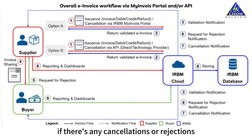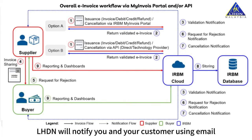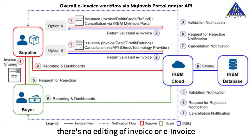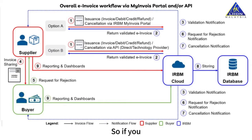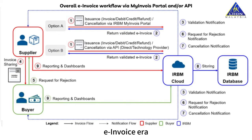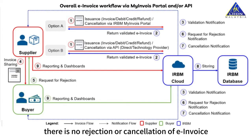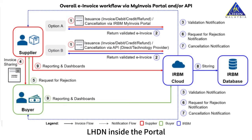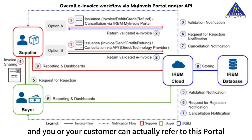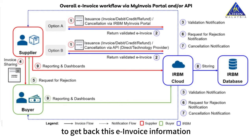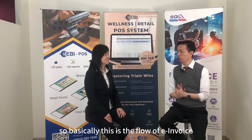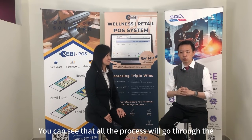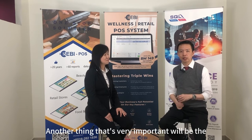If there are any cancellations or rejections, LHDN will notify you and your customer by email. There is no editing of the e-invoice by you or your customer after you get approval from LHDN. So if you tend to edit invoices, you need to think twice, as this will no longer be allowed in the e-invoice era. If there is no rejection or cancellation, the information will be kept by LHDN inside the portal, and you or your customer can refer to this portal to retrieve the e-invoice information. All processes go through validation and notification by LHDN. Another important thing is the email address.